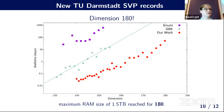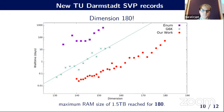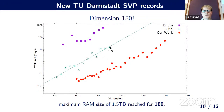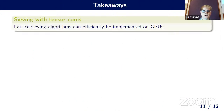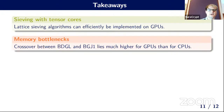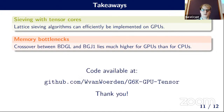These improvements yielded many new SVP records. Old records by the General Sieve Kernel using only CPUs are surpassed by new records on a single machine with four GPUs. The new record in dimension 180 was set in 51 days. For direct comparison, the dimension 176 record was achieved in less time than the dimension 155 CPU record, using only about twice the energy. The key takeaways: sieving algorithms can be efficiently implemented on GPUs, but memory bottlenecks require attention, making the BGGL/BGJ1 crossover much higher on GPUs than CPUs. Code is publicly available.